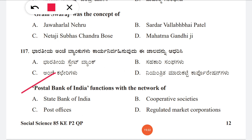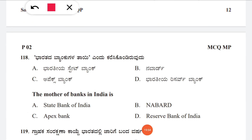Question 117: Postal Bank of India functions with the network of — option A: State Bank of India, B: cooperative societies, C: post offices, D: regulated market corporations. The correct answer is C, post offices. Question 118: The mother of banks in India — option A: State Bank of India, B: NABARD, C: Apex Bank, D: Reserve Bank of India. The correct answer is D, Reserve Bank of India, also called the bank of banks and the central bank of India.